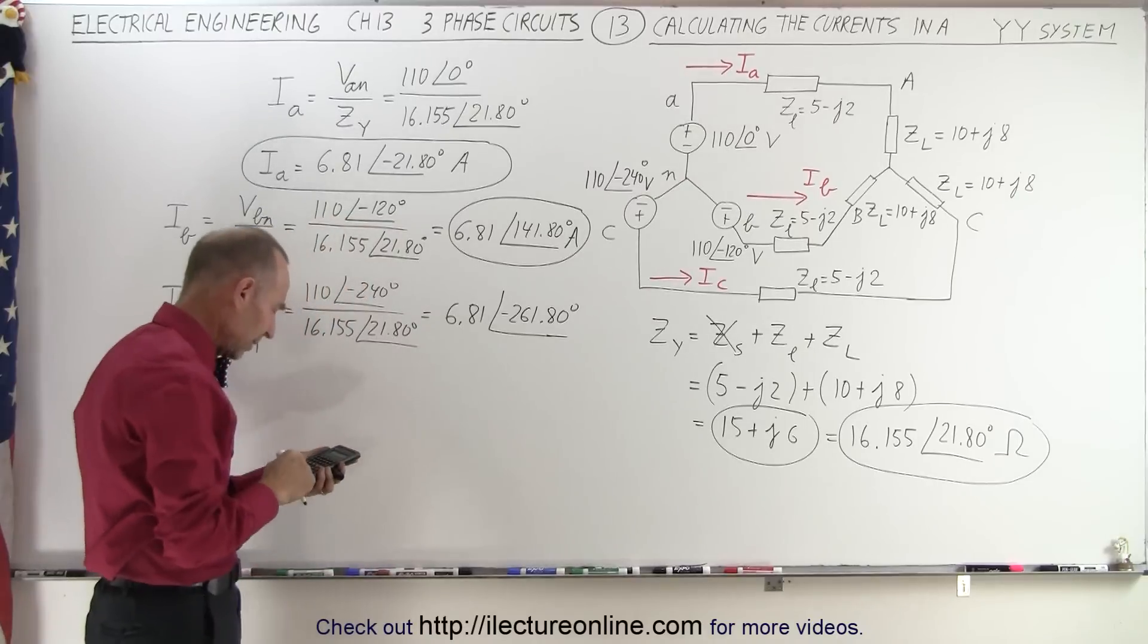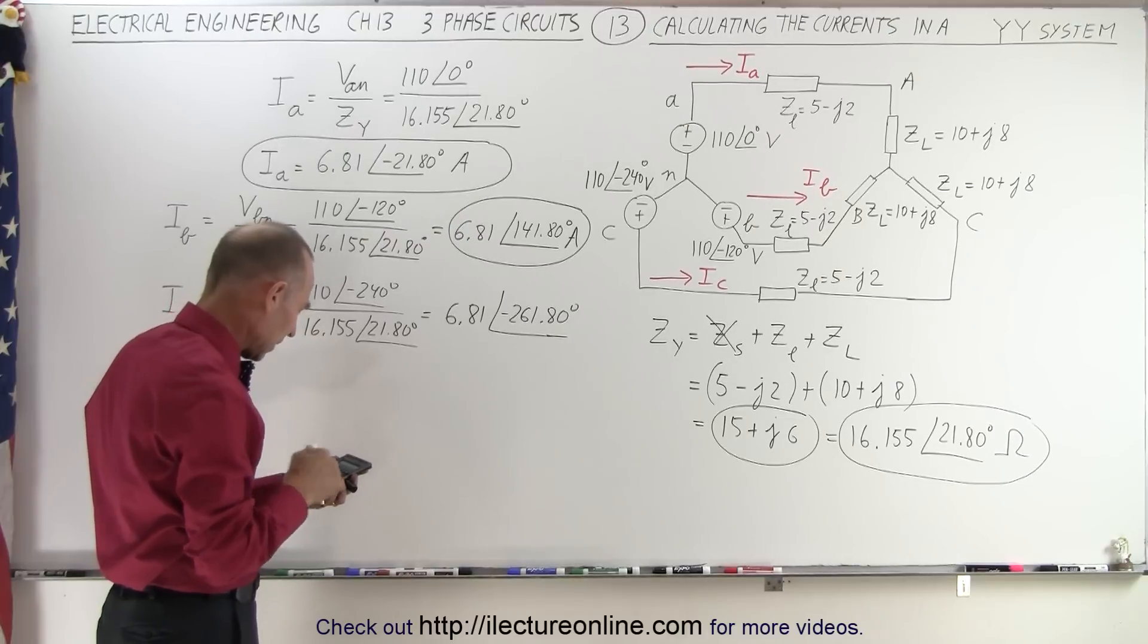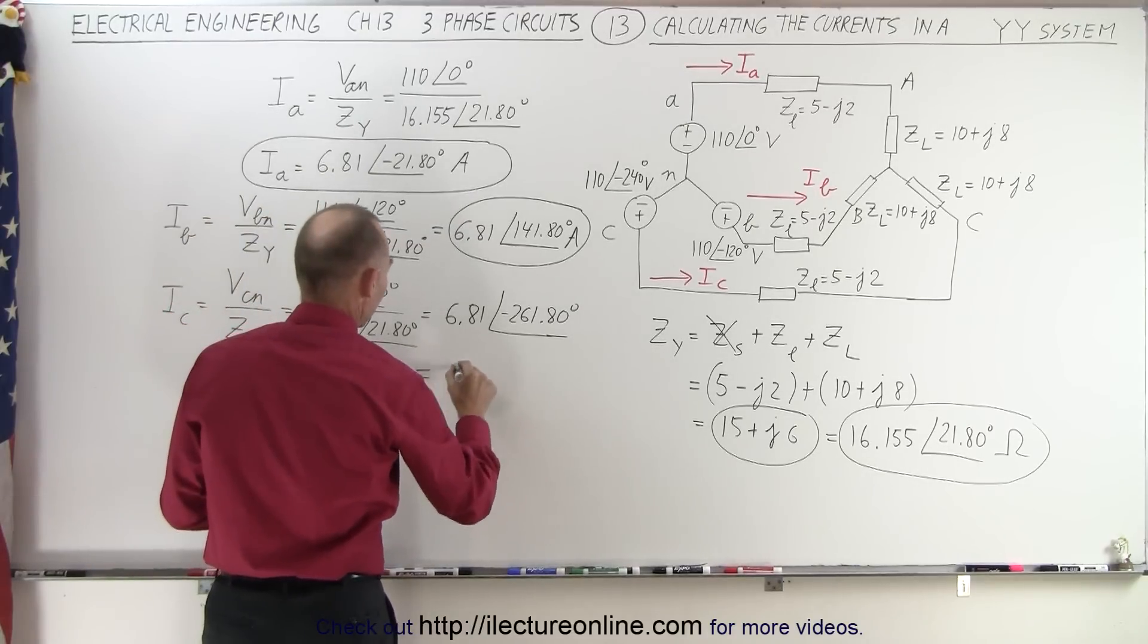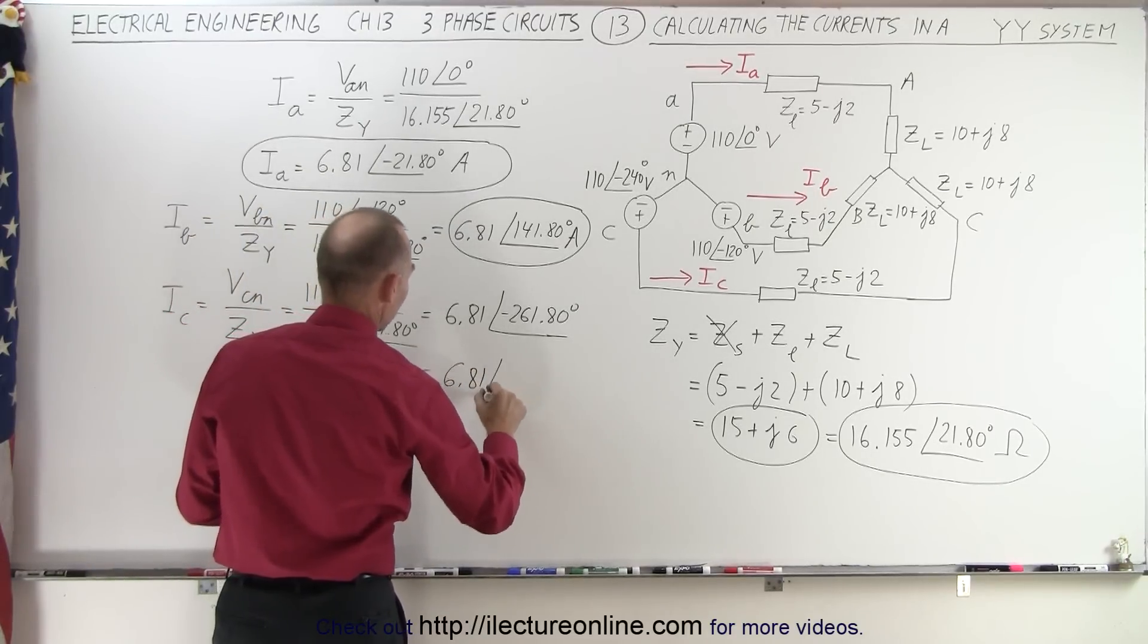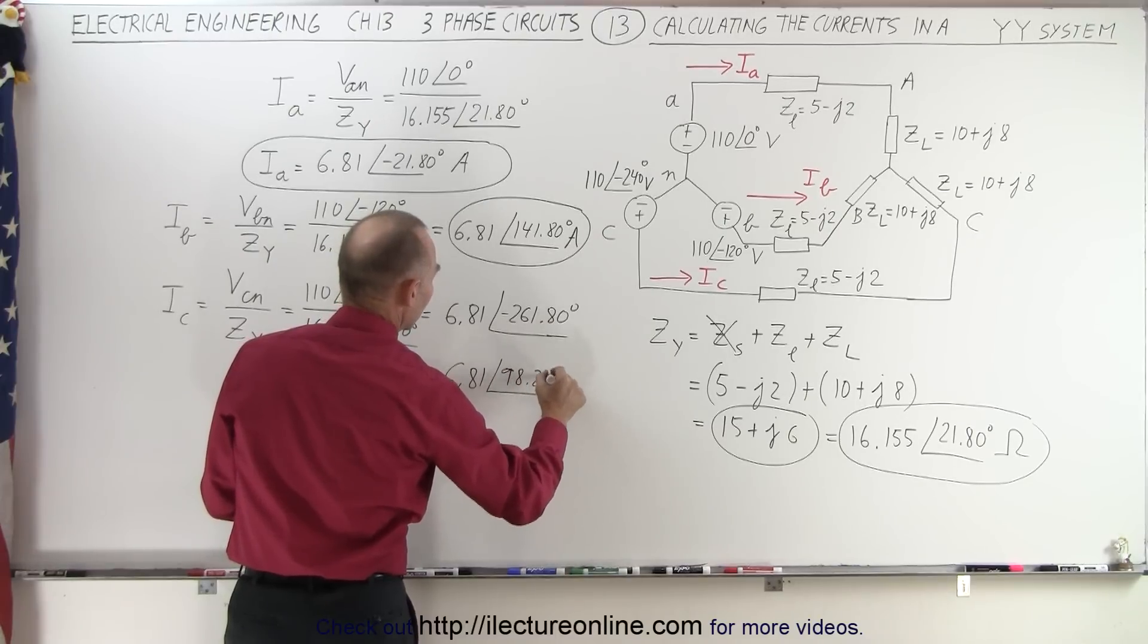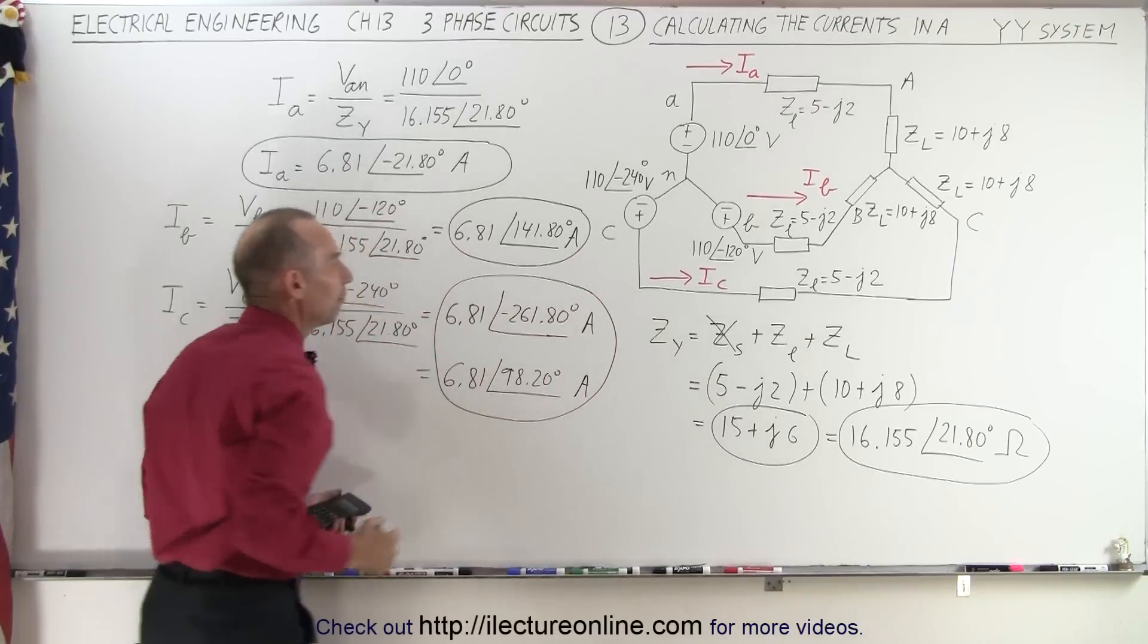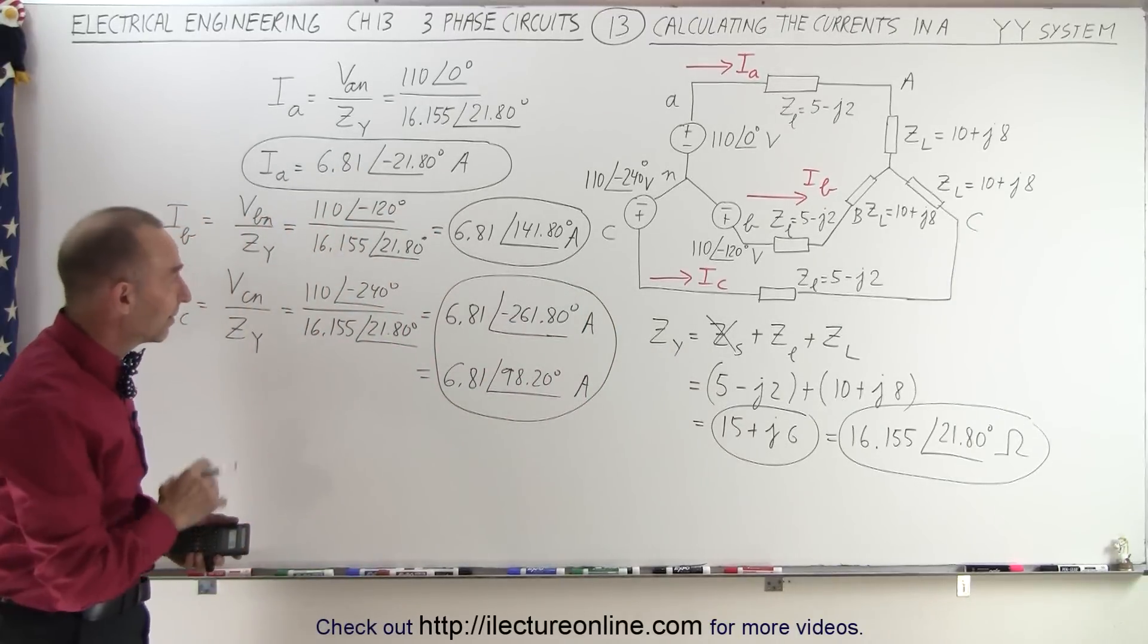Now, if we take 261.8 and add 360 to that, we can also write this as 6.81 with a phase angle of a positive 98.20 degrees. This is, of course, in amps. And so this would be the current for the third line, IC.